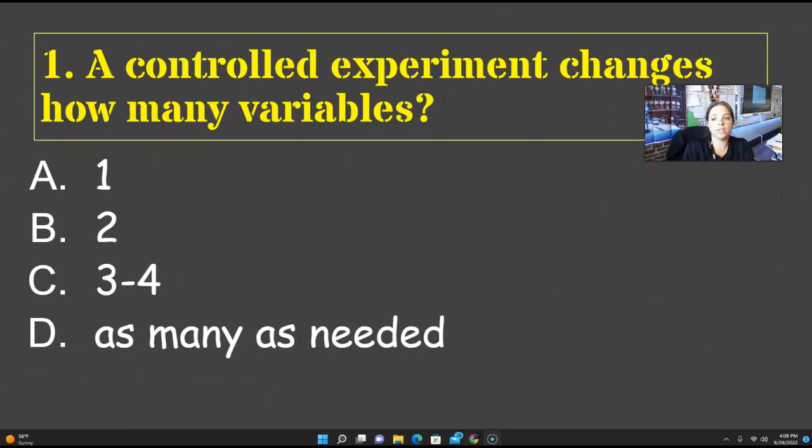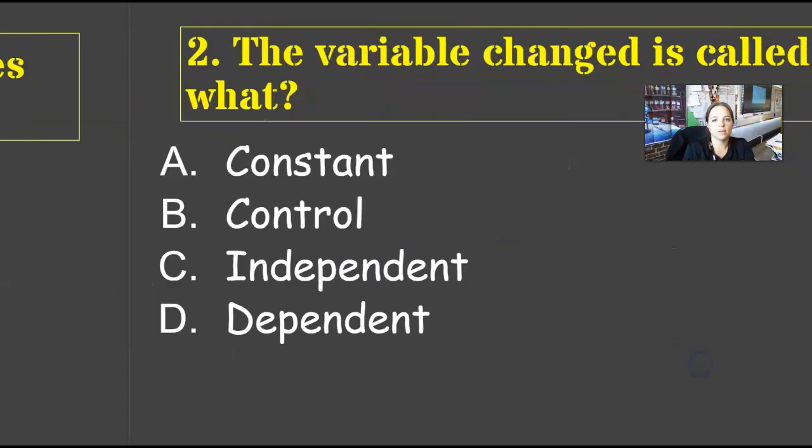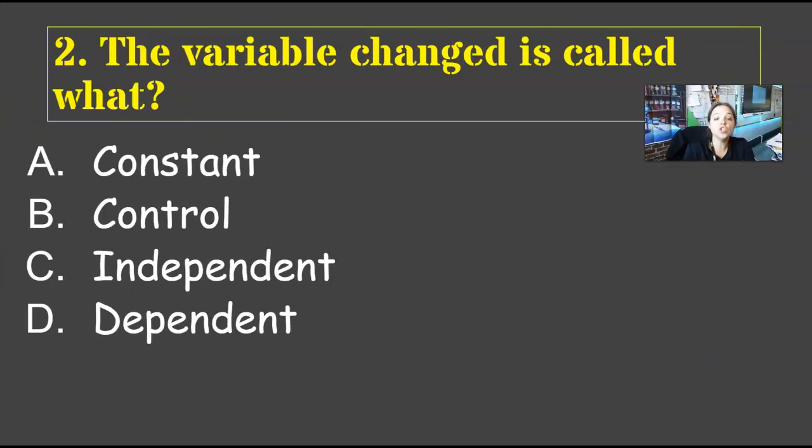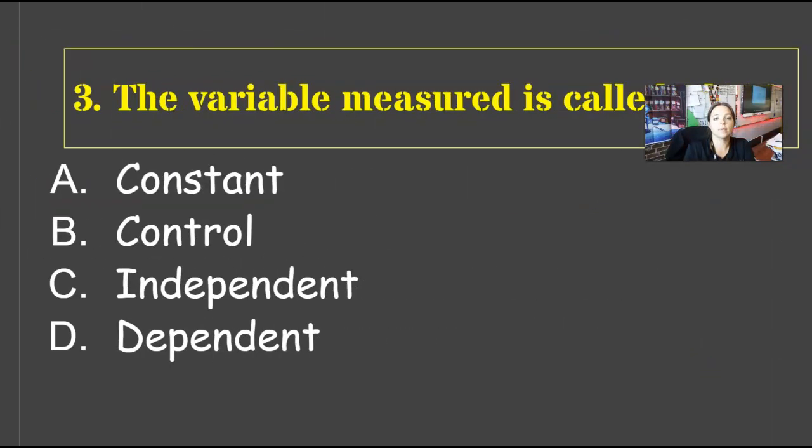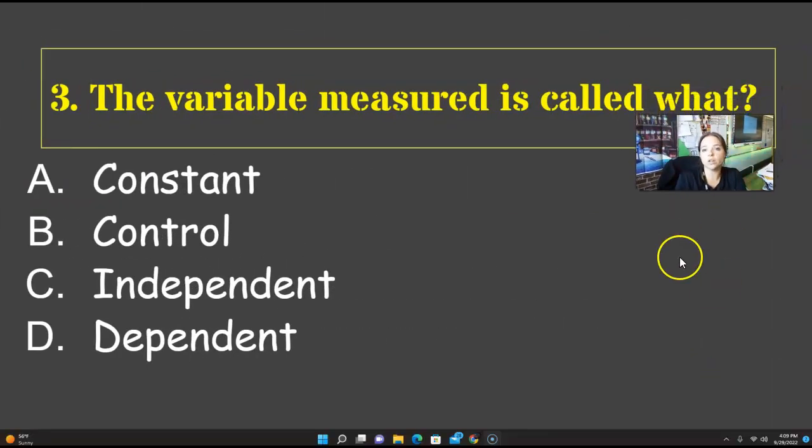All right, so we're going to go over this. If you got it wrong, make sure to highlight, star, underline in your notes. That means you need to go back and study. Reread. Make notes on a little index card so you remember this. A controlled experiment changes how many variables? Just one. The variable changed is called the independent. The variable measured, that one's the dependent.